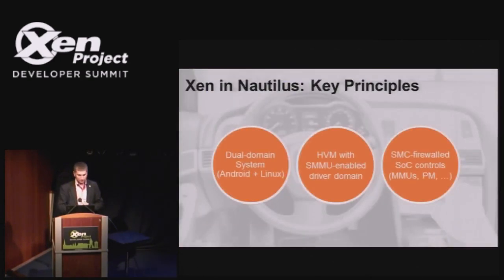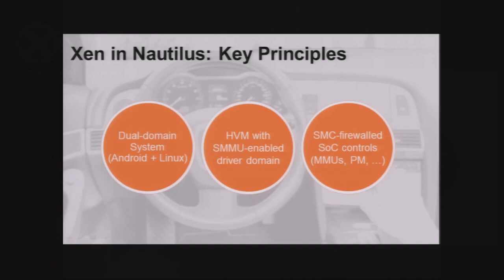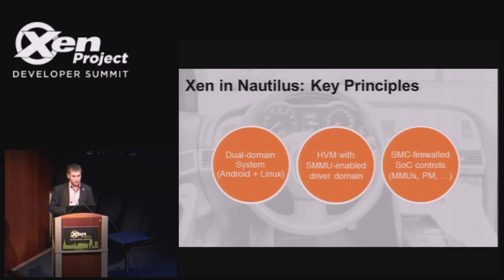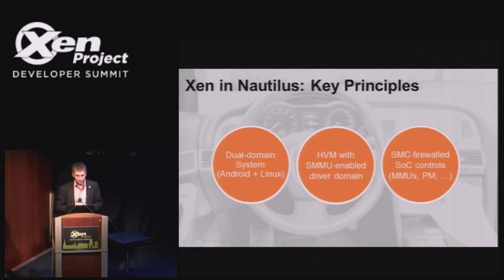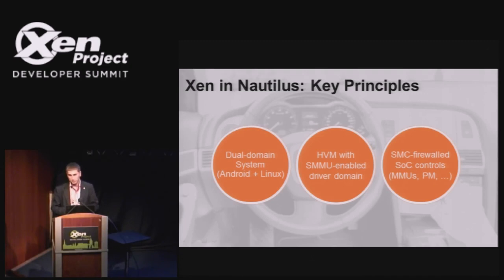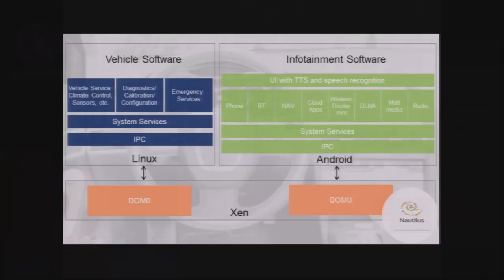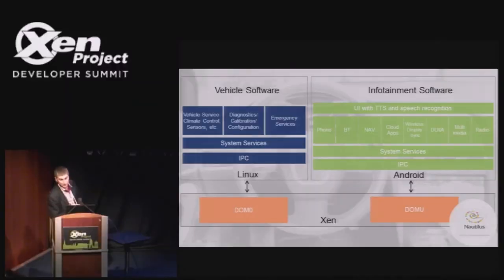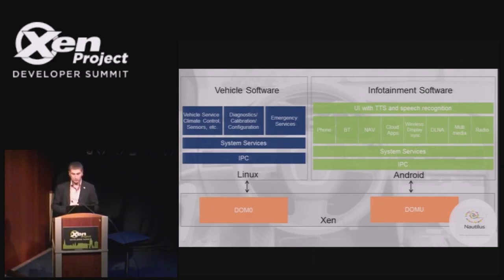Here are the key principles of what we did. We decided to go with a dual domain: Android is DOM U and Linux is DOM 0. We go with HVM with SMMU and enable driver domain, but it's not a separated driver domain. We just map hardware to Android in DOM U and firewalled most of the SoC controls, like MMU and power management. You don't want your Android to, for whatever reason, disable your head unit while you're driving. All kinds of vehicle services, diagnostic, system services, and IPC are in Linux, and everything else for the user is on DOM U.